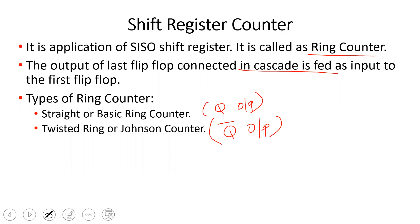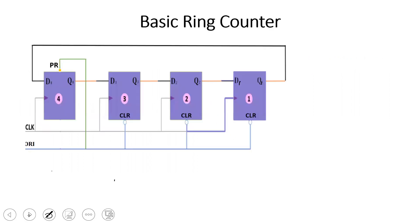This video covers the basic ring counter. We will explain the four-bit ring counter. So we have four flip-flops: flip-flop numbers four, three, two, and one. Flip-flop one is the first and flip-flop four is the last flip-flop.